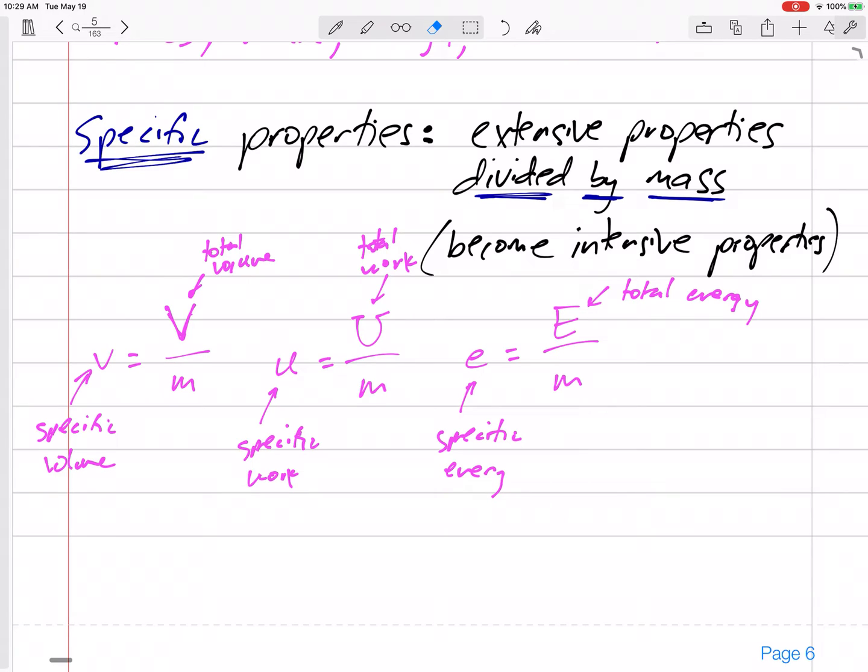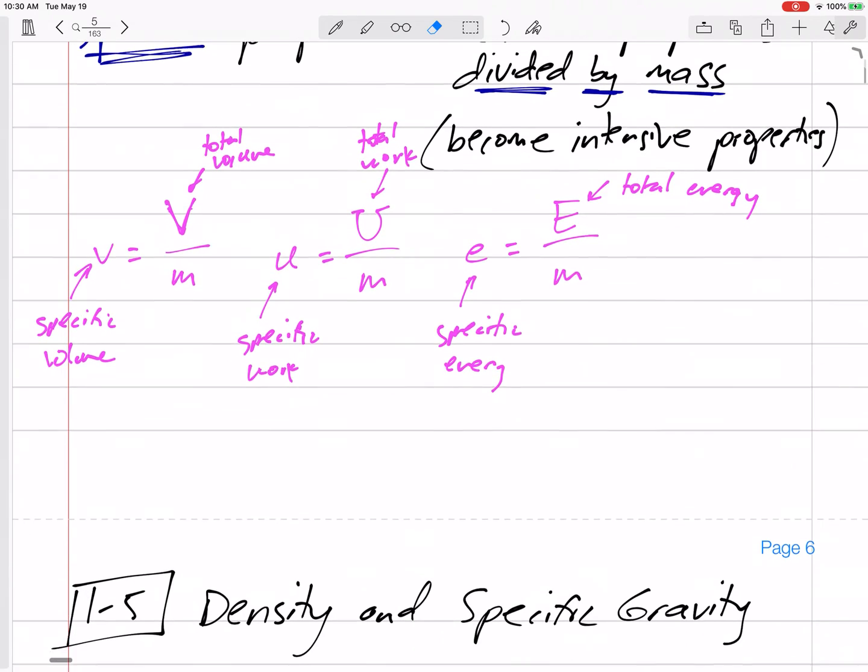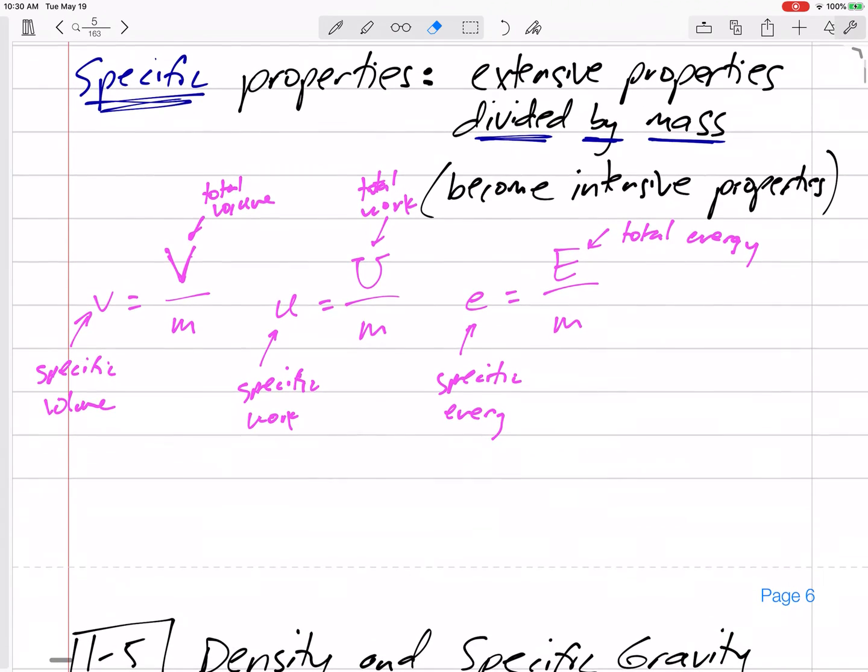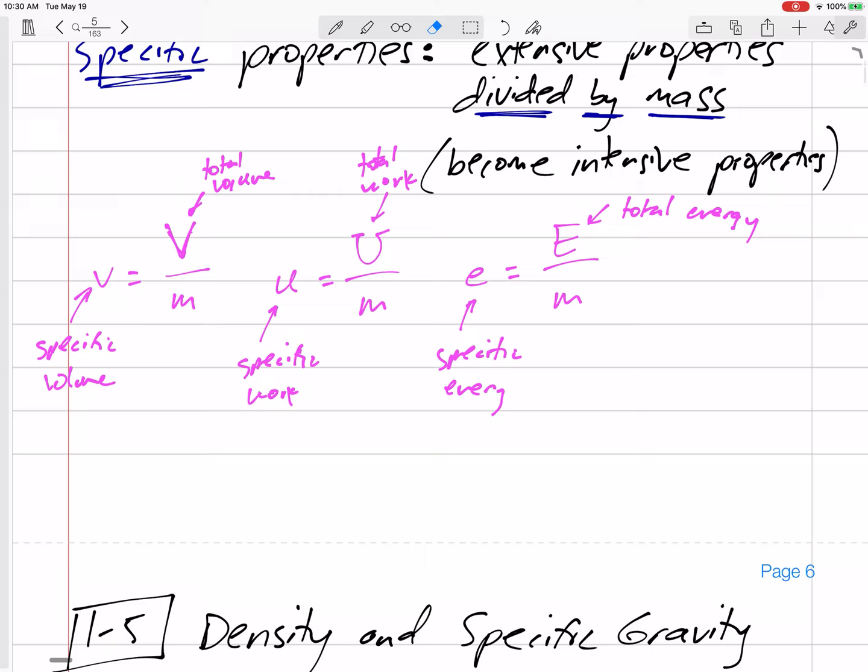Now pay careful attention throughout the semester. Are we talking about specific energy or total energy? Are we talking about specific work or total work? Because the units are different. In all our equations, we have to be consistent and homogeneous. We can't take specific energy and add it to total heat energy. We can't take a specific and add it with a total. They have to be consistent.